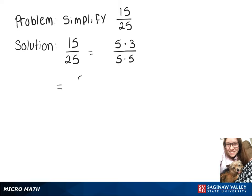We can now rewrite that as 5 over 5 times 3 over 5. Since 5 over 5 is just 1, that will cancel out, because 1 times 3 fifths is just 3 fifths.